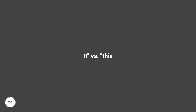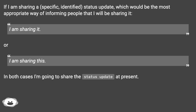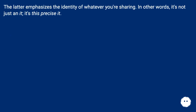"It" versus "this": if I am sharing a specific identified status update, which would be the most appropriate way of informing people — "I will be sharing it," "I am sharing it," or "I am sharing this"? In both cases I'm going to share the status update at present. The latter emphasizes the identity of whatever you're sharing.